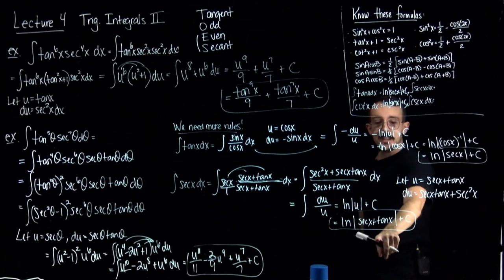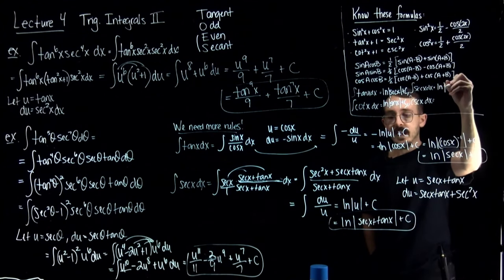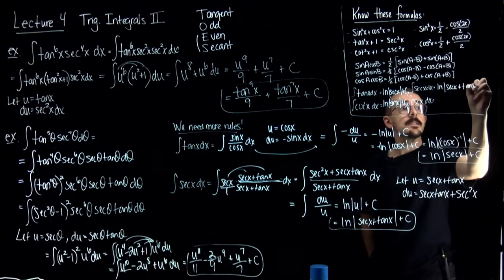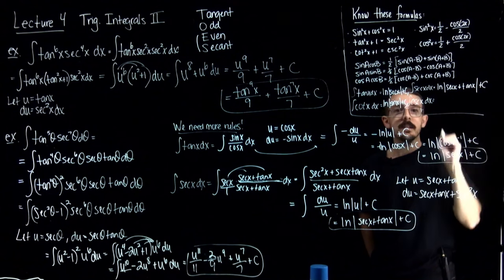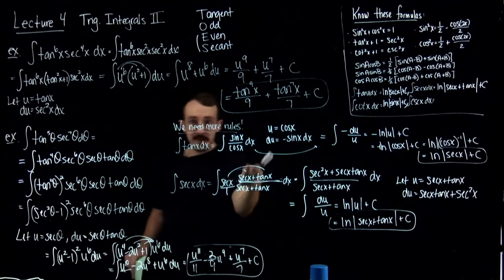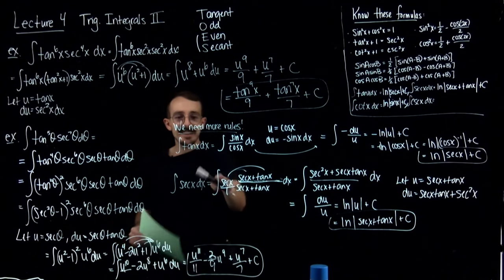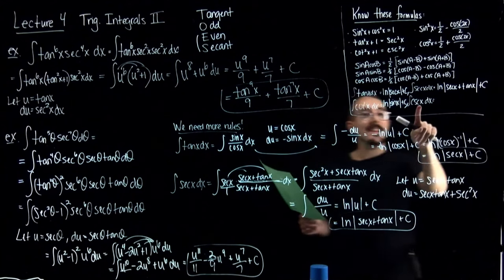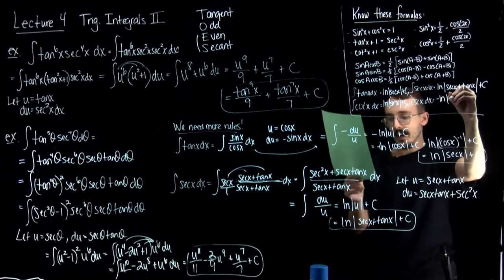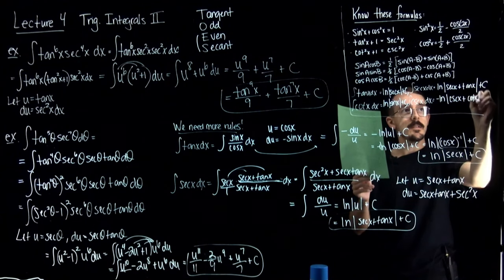So this is the answer to the integral of secant. The integral of secant x is the natural log of the absolute value of secant x plus tangent x, plus C. Very similarly, a very similar process shows that the integral of cosecant is negative ln absolute value of cosecant x plus cotangent x plus C.